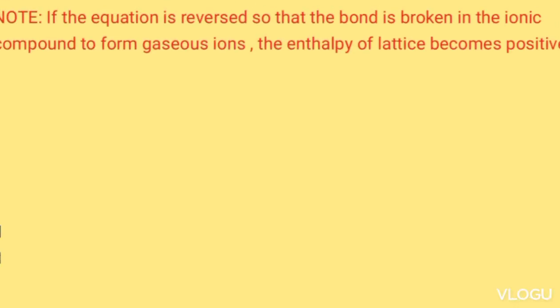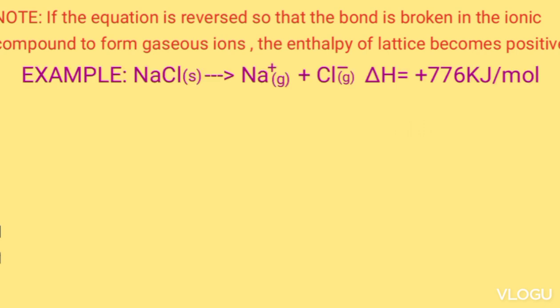Note that if the equation above is reversed so that the bond is broken and the ionic compound forms gaseous ions, the lattice energy becomes positive. Example: sodium chloride (solid) → sodium ion (gas) plus chloride ion (gas). ΔH lattice = positive 776 kilojoules per mole.